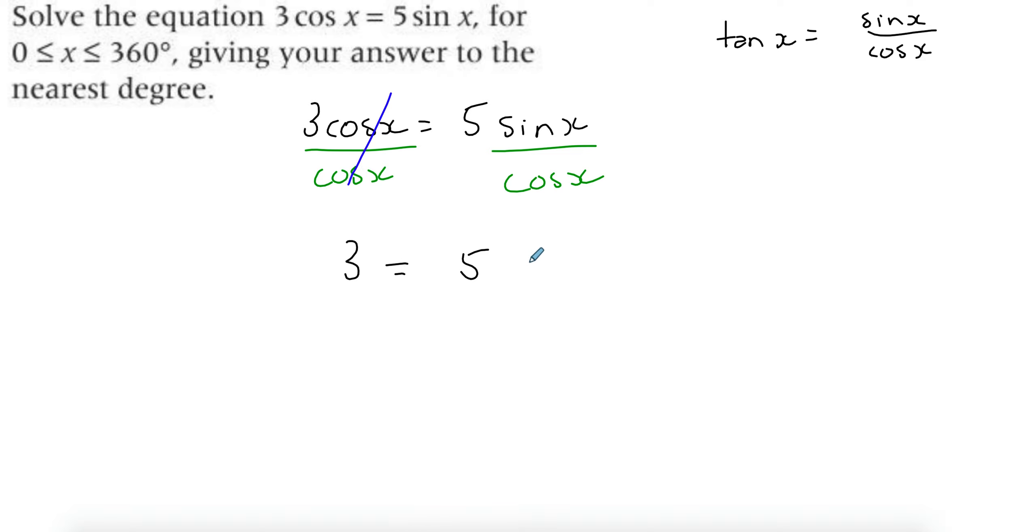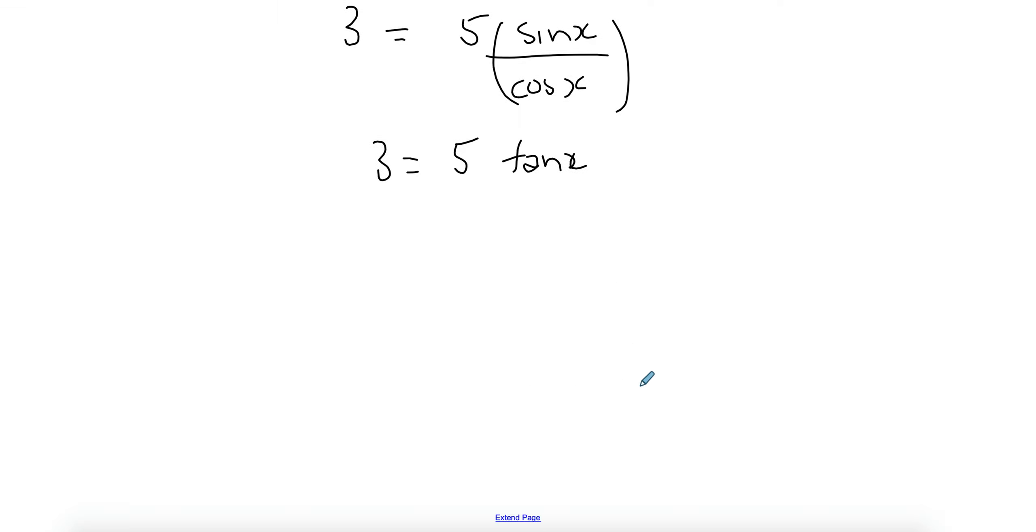So I have 3 equals 5 sin x over cos x. The 5 belongs to the sin x, it's the coefficient of sin x, but it's okay. So this whole thing is actually equal to tan. So I have 3 equals 5 tan x. I can make tan x the subject, and I'm just going to flip it around and divide both sides by 5. So I'm going to get tan x equals 3 over 5.